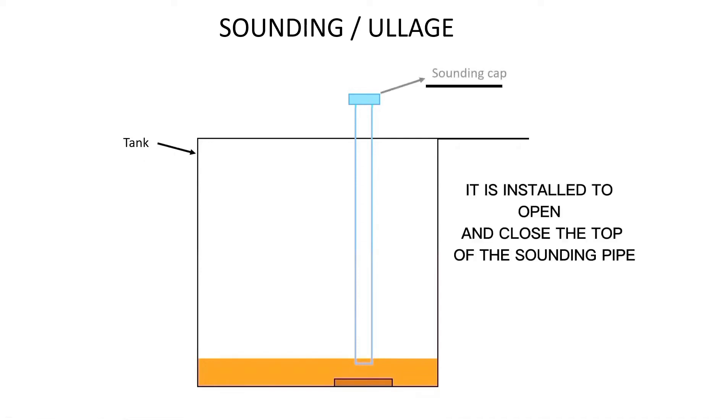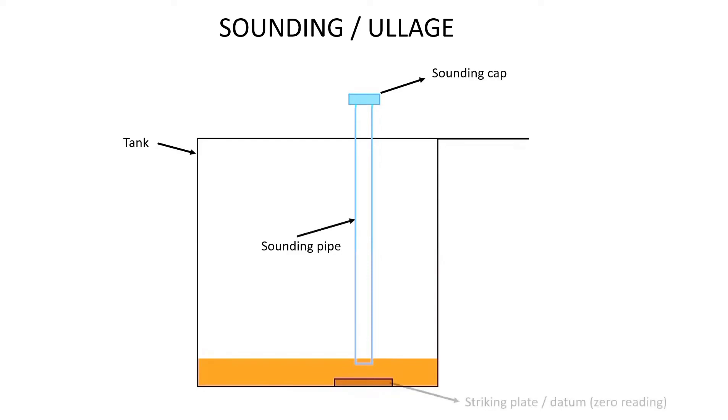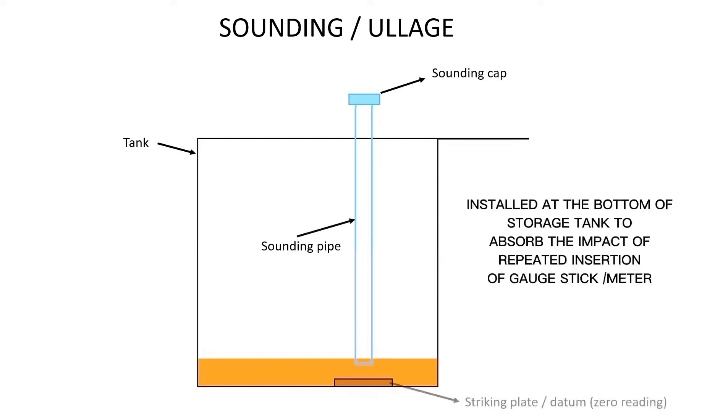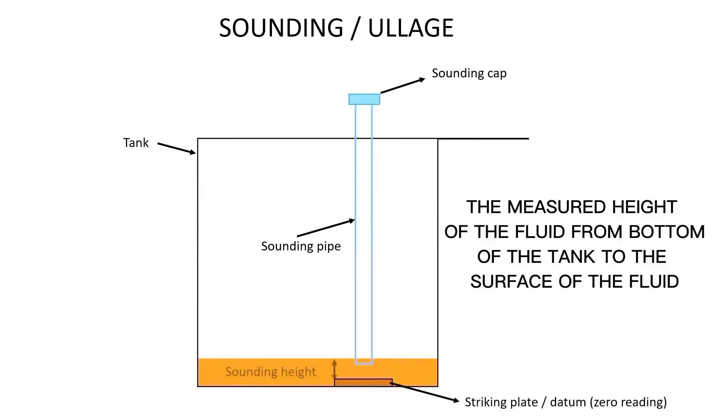Sounding Cap: It is installed to open and close the top of the sounding pipe. Sounding pipe is installed to measure the depth of the fluid filled in the tank. Striking plate, installed at the bottom of storage tank to absorb the impact of repeated insertion of gauge stick and meter. Sounding height, the measured height of the fluid from bottom of the tank to the surface of the fluid.